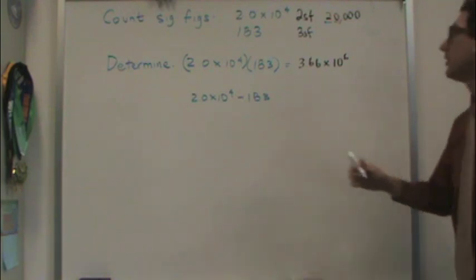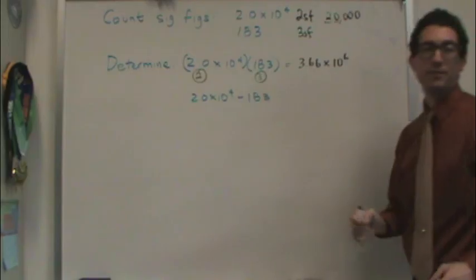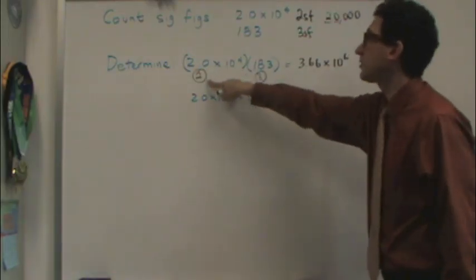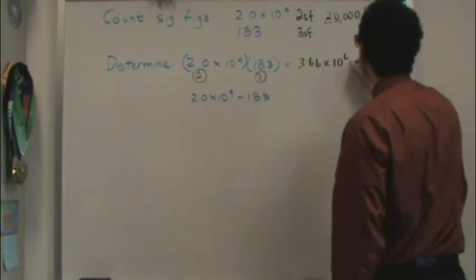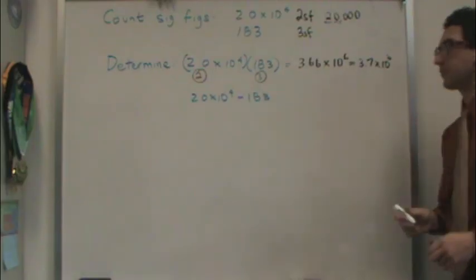However, you're multiplying something with two sig figs times something with three sig figs, so you take the lesser of the two. In that case, the answer should have two sig figs. So this is really 3.7 times 10 to the sixth is your final answer.